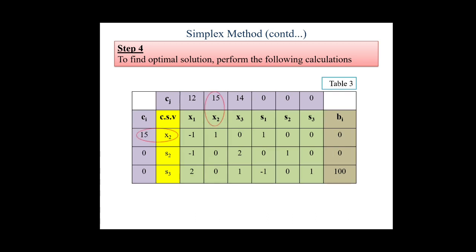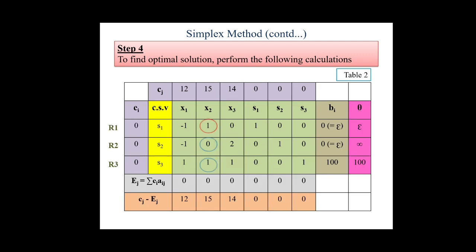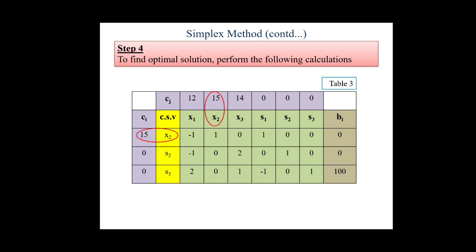...we have got this particular new table. And one thing more which we need to understand here, that when we are subtracting R1 from R3, so in that case, these calculations will go up to our bi column, that means 100 minus 0 will be written like this here. Now x2 has been replaced in the current solution variable, and the coefficient cj which was 15 there, we have written the same under the ei column also. So this becomes our new table to perform further calculations.